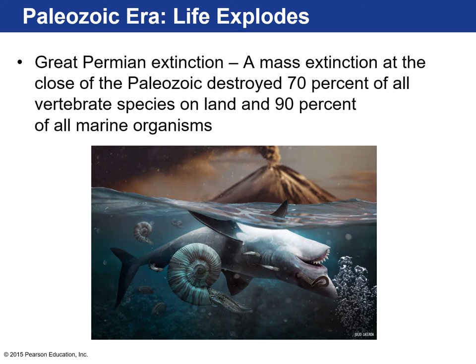All good things come to an end though. At the end of the Paleozoic there was the Great Permian Extinction — the most devastating mass extinction ever to occur in Earth's history. About 70% of vertebrate species on land died off and 90% of all marine organisms. Obviously sharks made it through — we have them today. The leading theory is that a massive outpouring of basaltic lava called the Siberian Traps in Russia occurred during that time, dumping an extraordinary amount of CO₂ into the atmosphere and oceans, which caused this mass extinction.